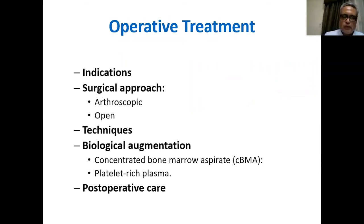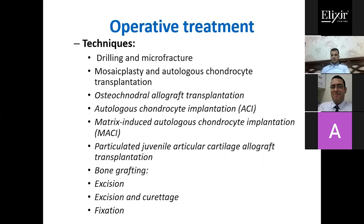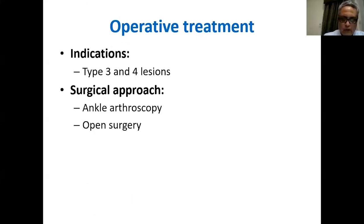For operative treatment, there is a wide list of options, and for each patient you need to select the one most suitable — like an à la carte selection. Options include drilling with microfracture, mosaicoplasty, autologous osteochondral transplantation, osteochondral allograft transplantation, autologous chondrocyte implantation (ACI), matrix-induced autologous chondrocyte implantation (MACI), particulated juvenile articular cartilage allograft transplantation, bone grafting, excision, excision with curettage, and fixation.